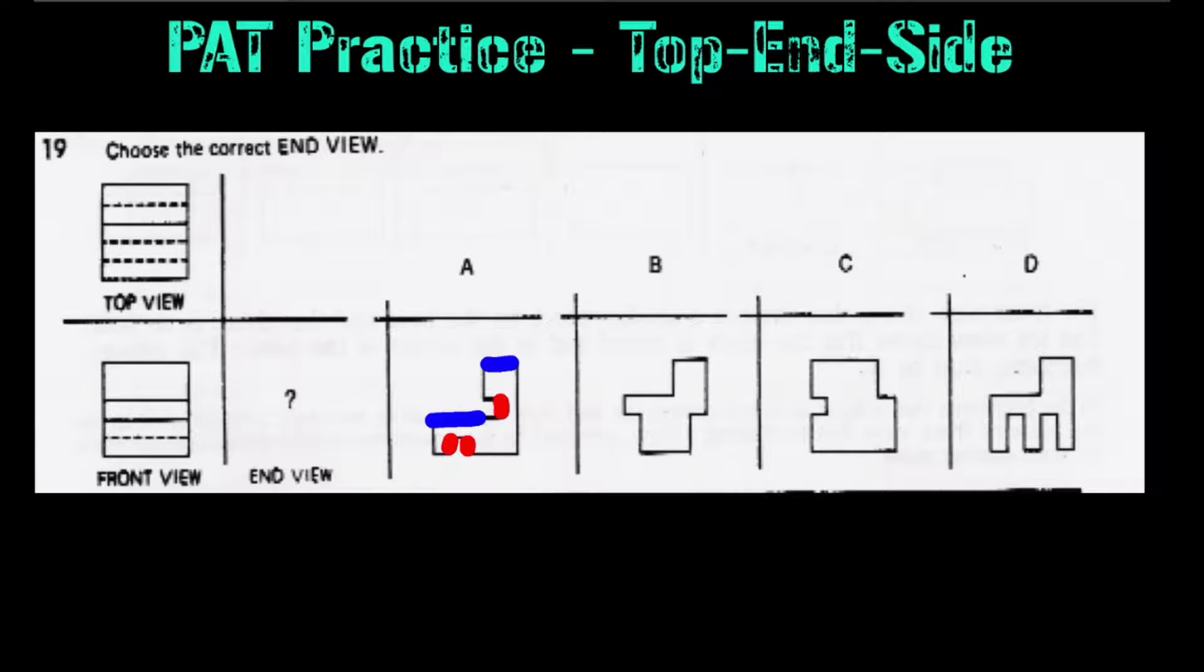Now let's move on to B. Again, we're going to highlight our two sections that are in direct view, and then we're going to highlight the sections that you can't directly see. So we have a vertical line here and a vertical line here. Now, this is really important because, as you can see, we only have two dotted lines here, but the top view has three.